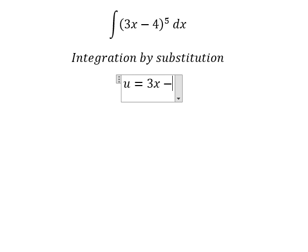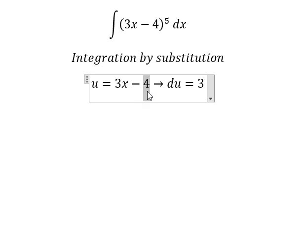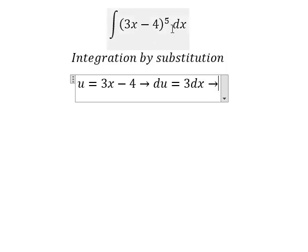...3x minus 4. Next, we need to take the derivative of both sides. The derivative of u is 1, and for 3x minus 4, the constant 4 gives us 0.